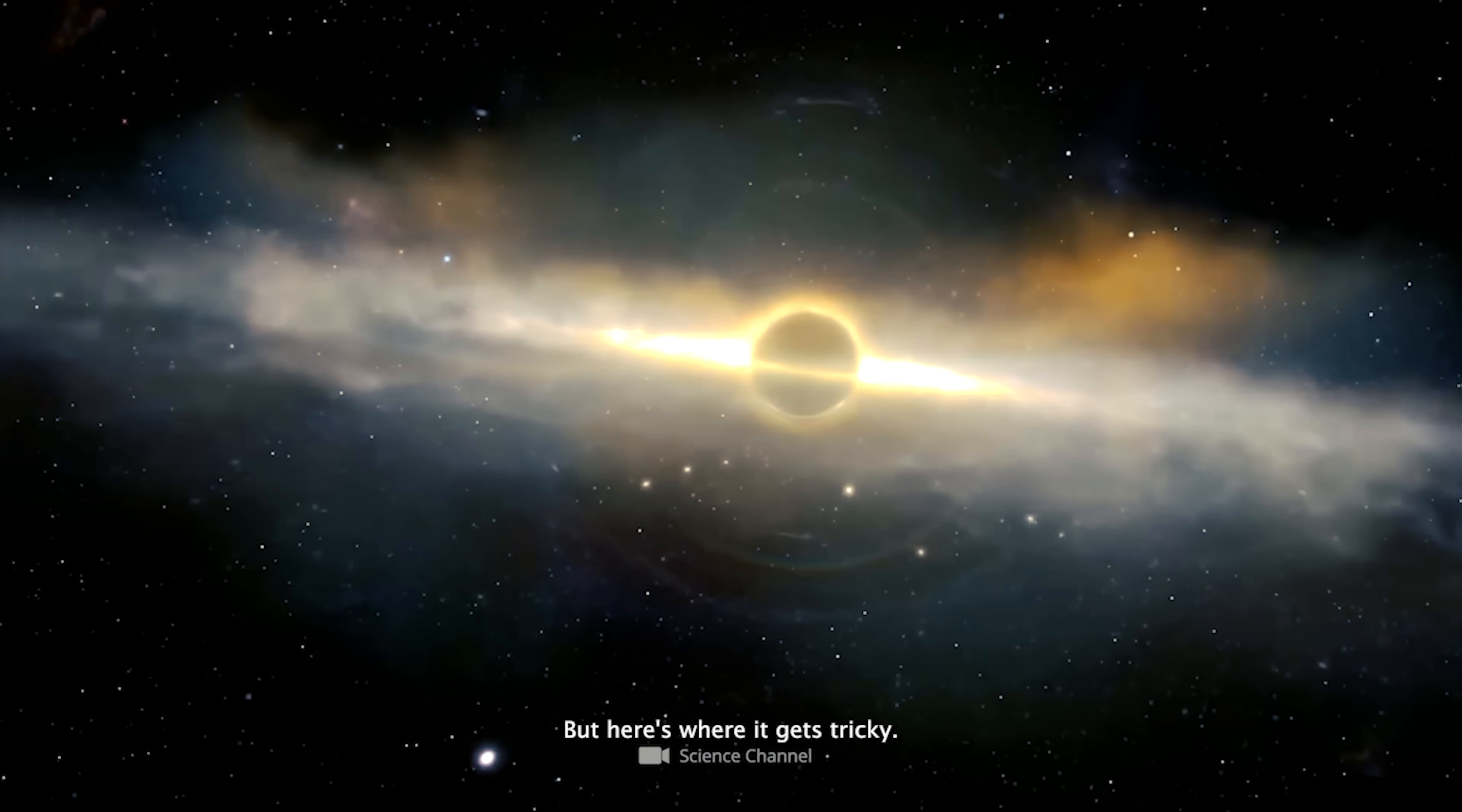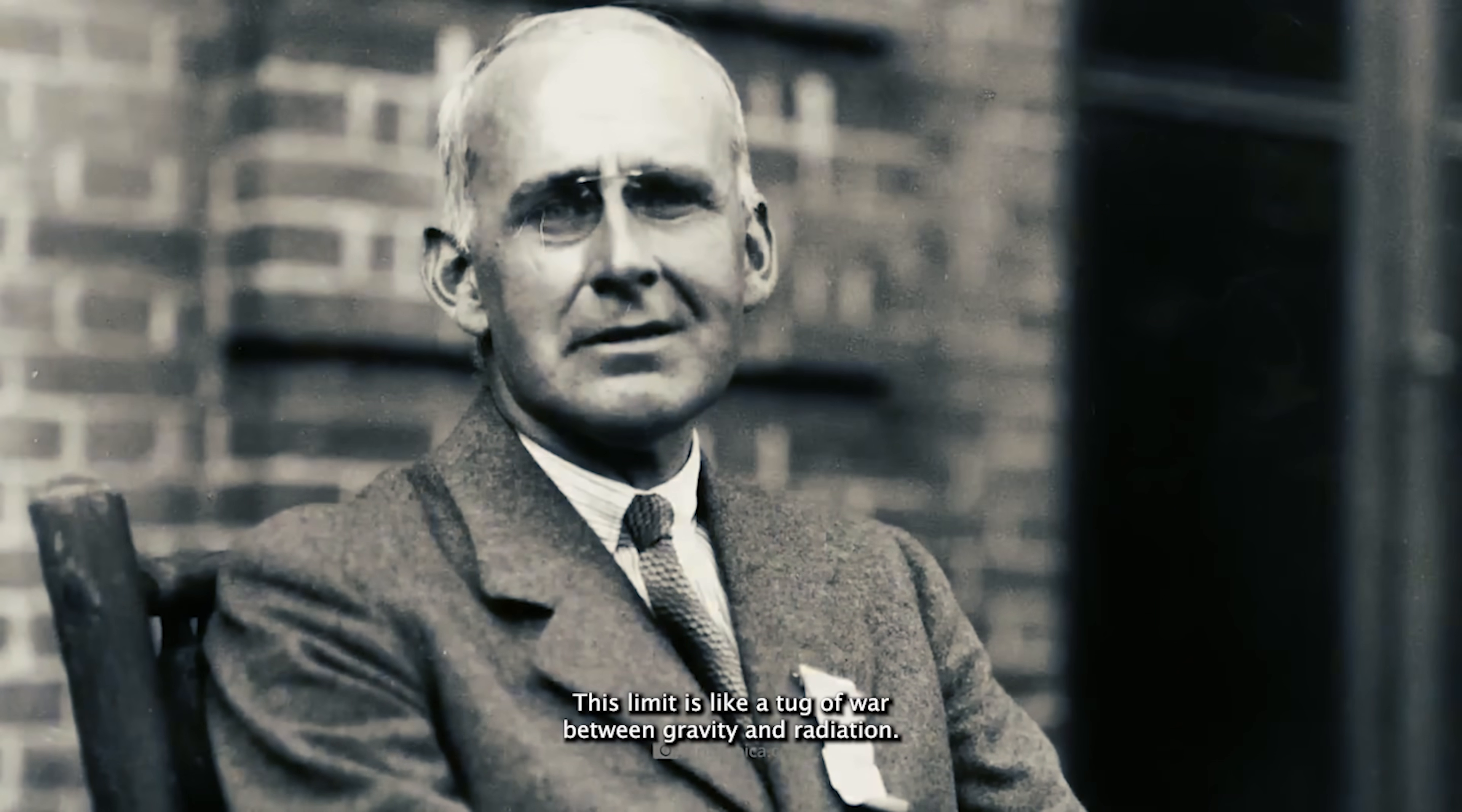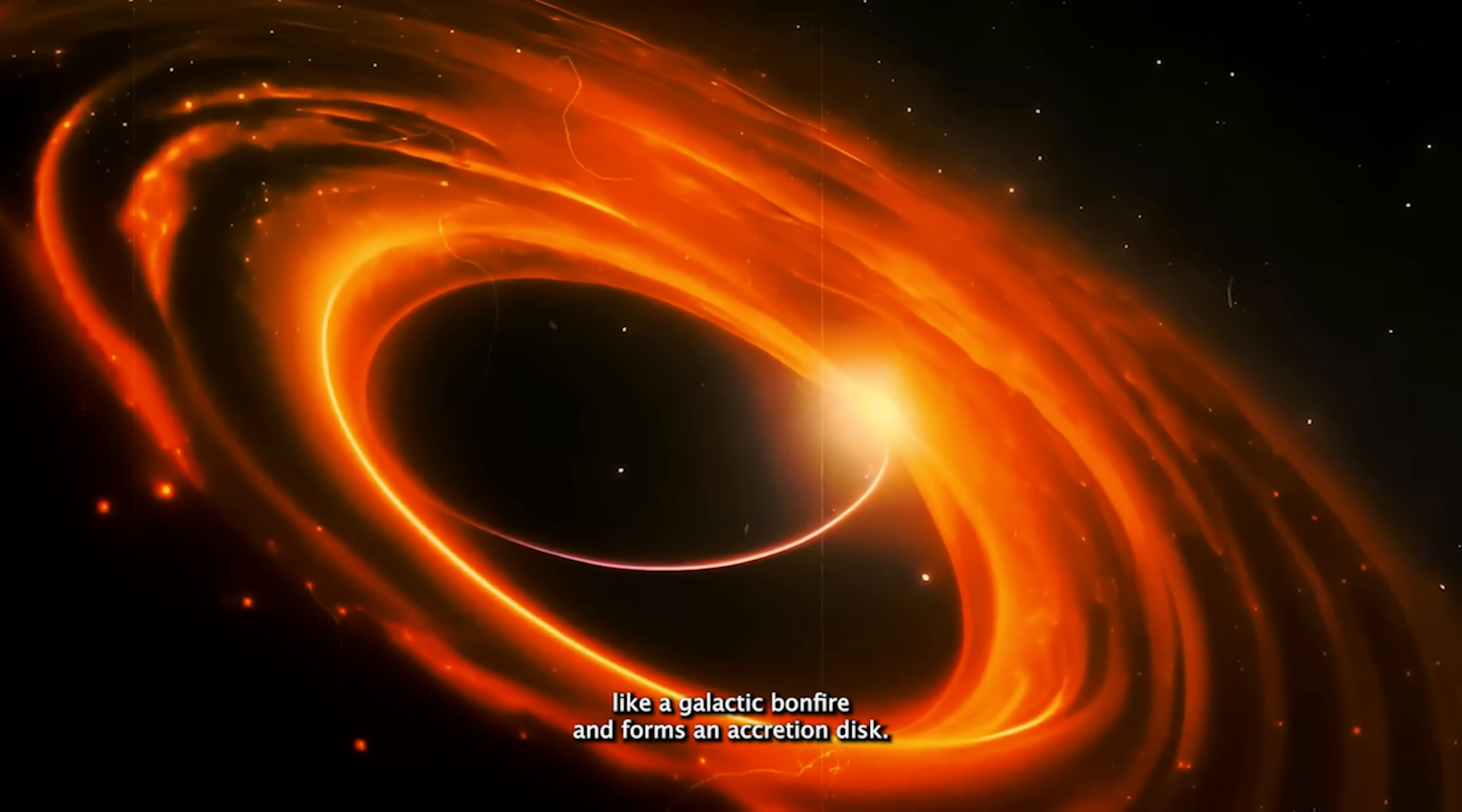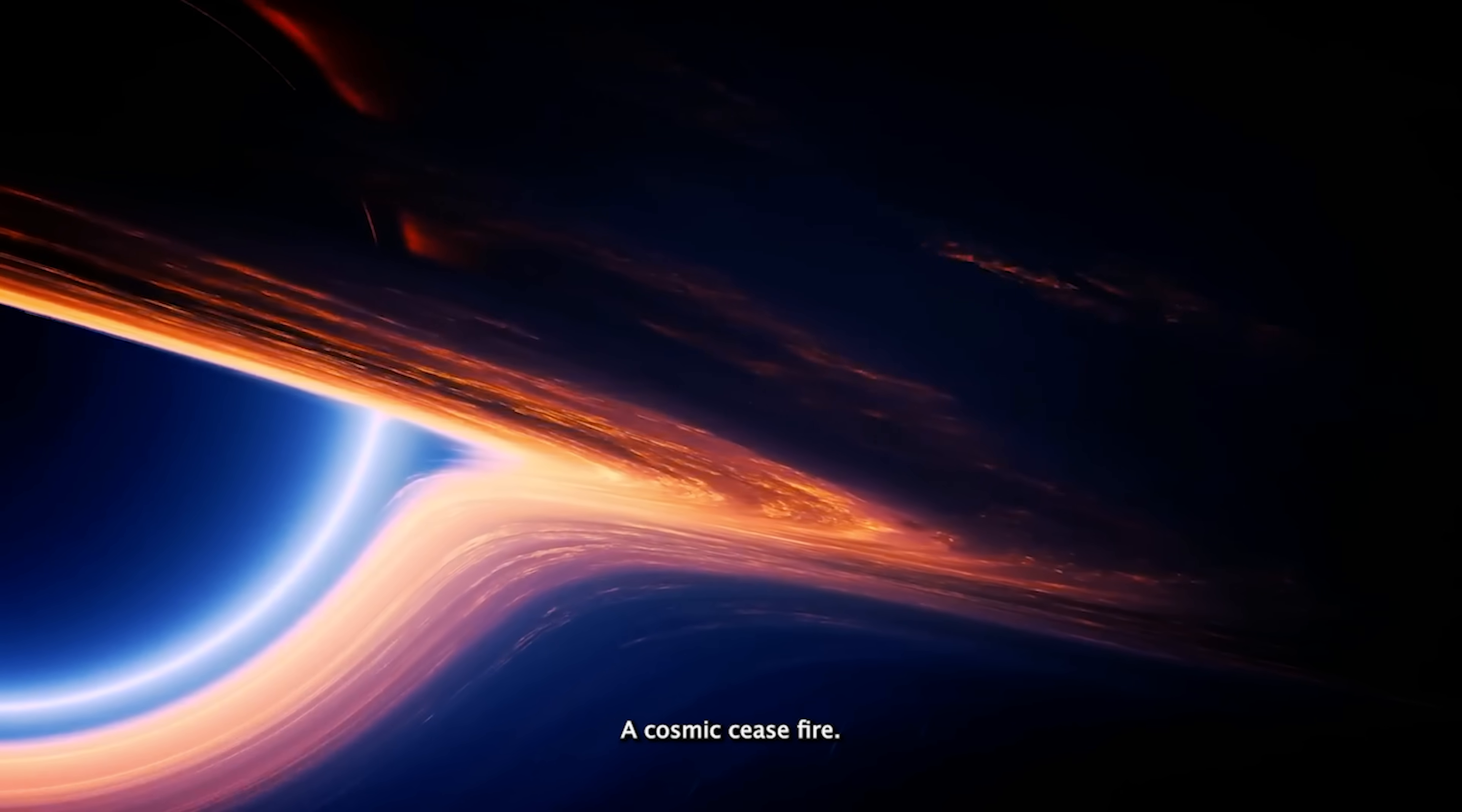But here's where it gets tricky. Black holes aren't supposed to grow without limits. Enter the Eddington limit, the universe's built-in cosmic speed bump. Named after British astrophysicist Sir Arthur Eddington, this limit is like a tug of war between gravity and radiation. When a black hole pulls in gas and dust, the material heats up, glows like a galactic bonfire, and forms an accretion disk. That glowing disk blasts out radiation, pushing stuff away while gravity tries to pull more stuff in. The Eddington limit is the point where those two forces cancel each other out. A cosmic ceasefire.